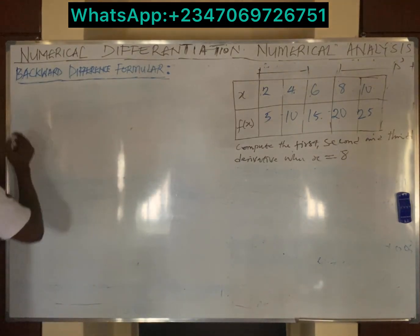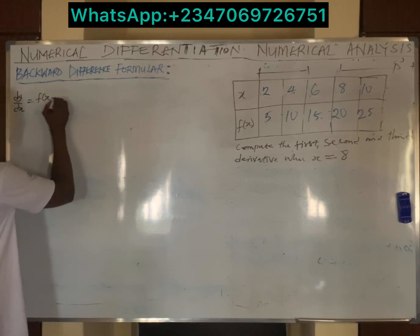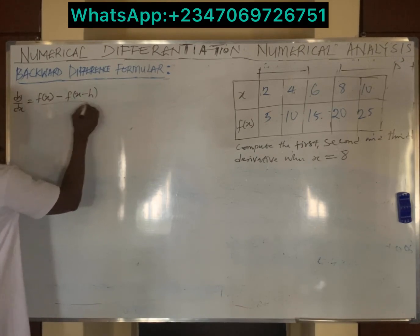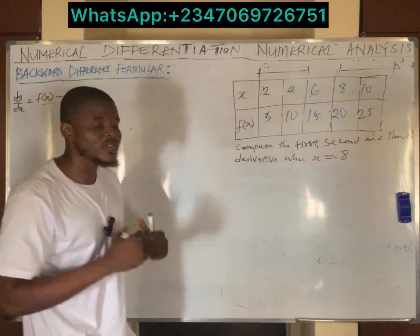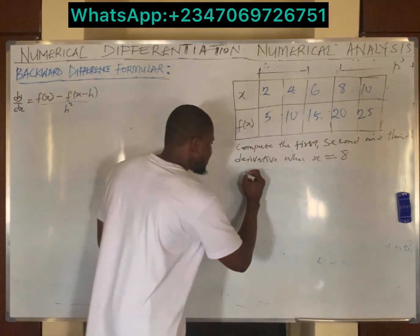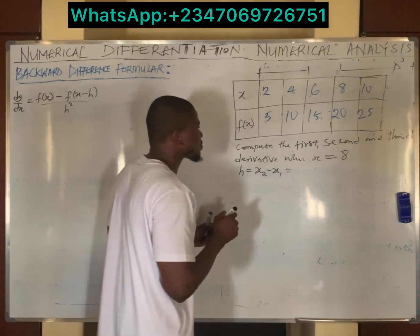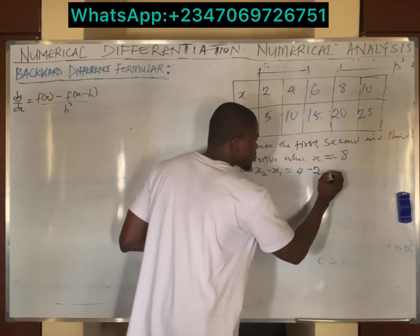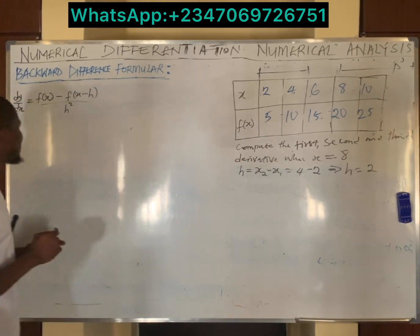For the first derivative, dy/dx, the formula is: f(x) minus f(x minus h), all divided by h. We need to find h and all values that make up this formula. h is simply the step size or interval — the difference between successive x values, such as x2 minus x1. Here x2 is 4 and x1 is 2, so h equals 4 minus 2, which is 2.